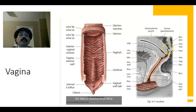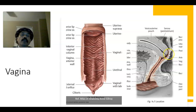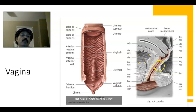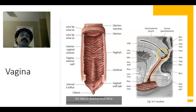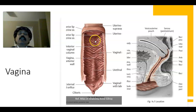This forms the fornix — we have the posterior fornix, anterior fornix, and two lateral fornices. These fornices are continuous and communicate with each other. The vagina is related anteriorly to the urinary bladder and posteriorly to the rectum, and also related to the cervix in its upper part.